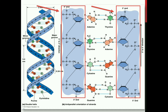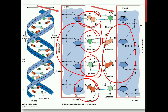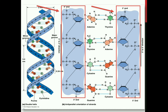DNA का structure कुछ इस तरह का होगा, जिसमें दो polynucleotide chains होंगी — एक chain और उसकी बिल्कुल complementary दूसरी chain। Purines are nine-membered double ring structures, जिनमें adenine और guanine आते हैं। Pyrimidines are six-membered rings, और यहाँ पर thymine और cytosine होते हैं। RNA में thymine की जगह uracil होता है। यह चार nitrogen bases decide करते हैं कि कौन से type का nucleotide होगा।